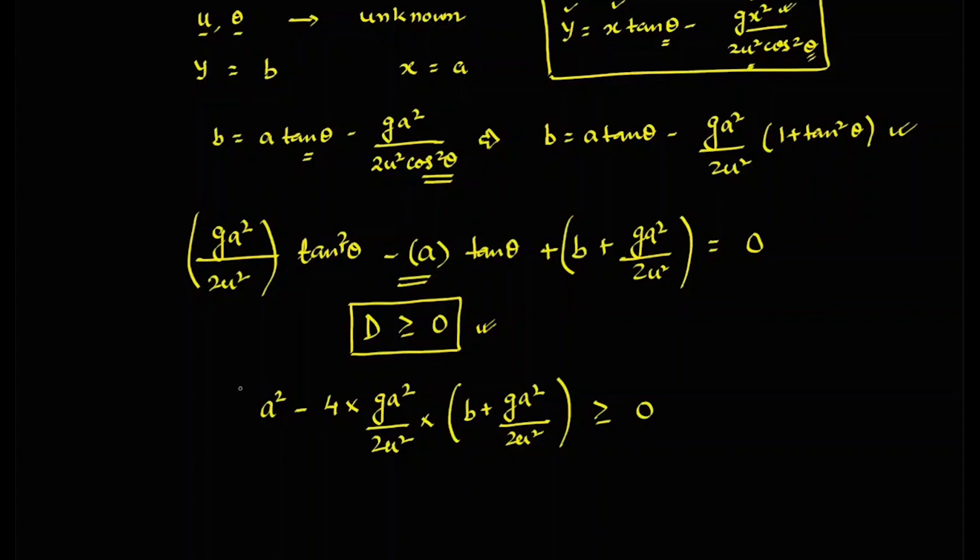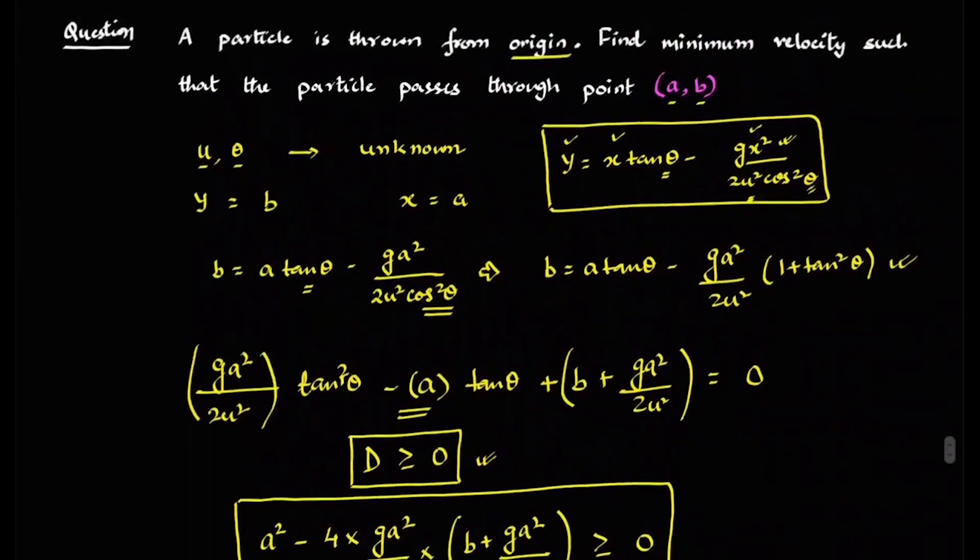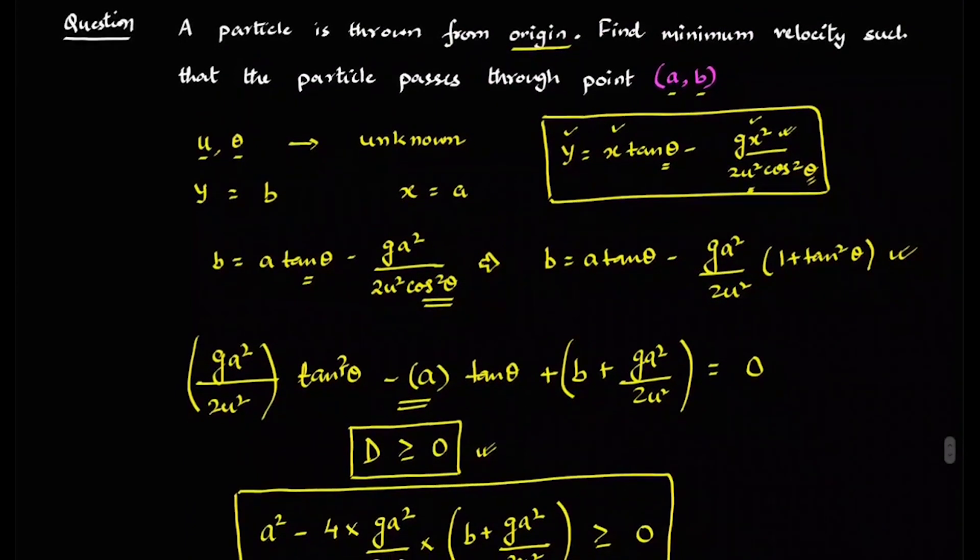You have to solve this question because now we have a quadratic in U. You can actually find the minimum U from here. But what I wanted to tell you in this particular question is the question can be made much simpler if you actually use the quadratic equation.